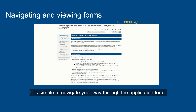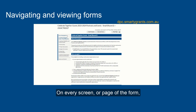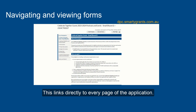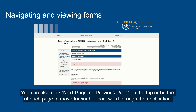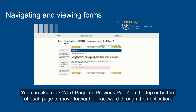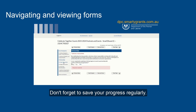It is simple to navigate your way through the application form. On every screen or page of the form, you will find a Form Navigation Contents box. This links directly to every page of the application. Click the links to jump directly to the page you want. You can also click Next Page or Previous Page at the top or bottom of each page to move forward or backward through the application. Don't forget to save your progress regularly.